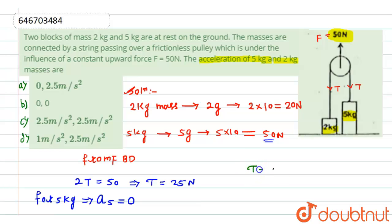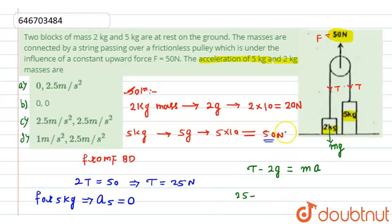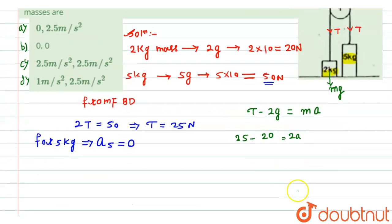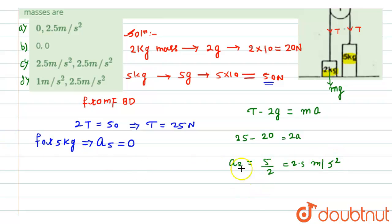The equation is: T minus 2g equals m into a, where 2g is the gravitational force acting downward. Substituting the values: 25 minus 2 into 10 equals 2 into a, so 25 minus 20 equals 2a, giving us 5 equals 2a. Therefore, the acceleration for the 2kg block is 5 divided by 2, which equals 2.5 meter per second square.